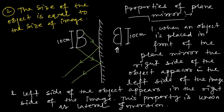But if I just place my eye here — suppose this is my eye — I can see that the image appears to meet in the back side of the mirror. The light rays appear to meet in the back side of the mirror. That is why we can say that a virtual image is formed in the case of a plane mirror.